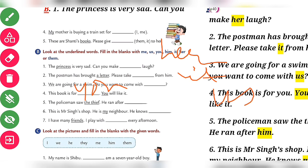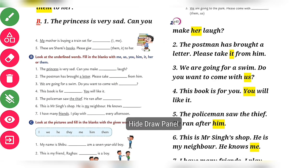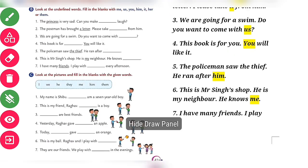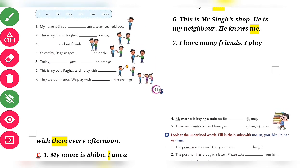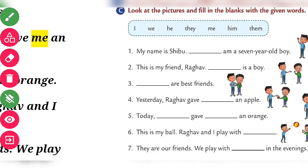Fifth: 'The policeman saw the thief, he ran after him.' Sixth: 'This is Mr. Sings Chops, he is my neighbor, he knows me.' Seventh: 'I have many friends, I play with them every day.'